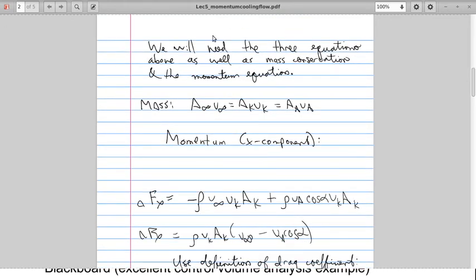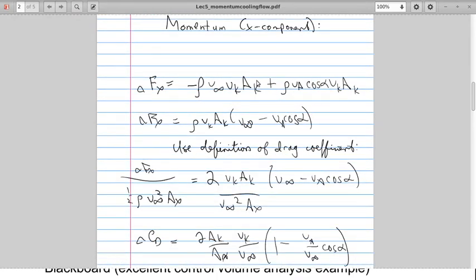So then we need those three equations as well as mass conservation and the momentum equation. So for mass, we know that the free stream area associated with the inlet stream tube times the velocity there is equal to the area of the radiator times the velocity there, which is equal to the area of the exit times the velocity there.